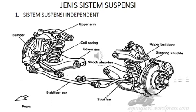Kalau kalian perhatikan pada gambar tersebut, komponen dari wishbone pegas coil di antaranya ada upper arm, ada lower arm, coil spring, bumper, kemudian shock absorber, stabilizer bar, strut bar, knuckle arm. Itu adalah komponen-komponen yang ada pada jenis suspensi wishbone pegas coil.